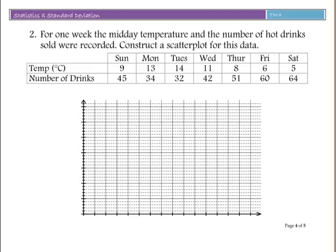Here's another one. For one week, the midday temperature and the number of hot drinks sold were recorded. Construct a scatterplot for this data. When looking at the independent and dependent variables, you would expect the number of hot drinks would be dependent on the temperature. So hot drinks go on my y-axis and temperature on my x-axis. Go ahead and have a go at this one yourself.